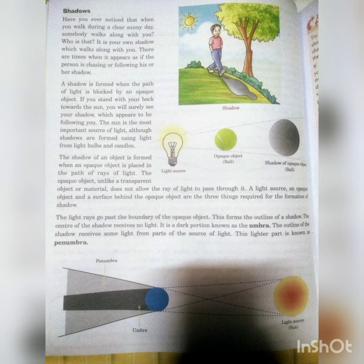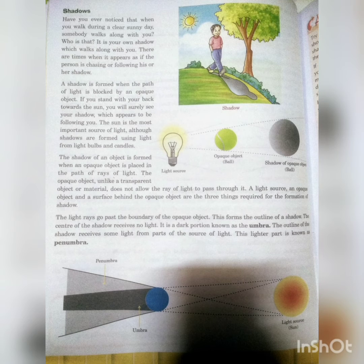The outline of the shadow receives some light from the source of light. This lighter part is known as penumbra — aur yahi jo sabse halka part hai, wo penumbra hai. Children, I hope aap logo ko umbra aur penumbra samajh mein aa gaya. Source of light hai, object uske beech mein aa raha hai, to light ko block kar deta hai, shadow ban jaata hai. Jo dark part hai wo umbra, jo light part hai wo penumbra.